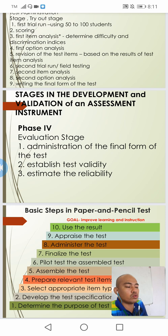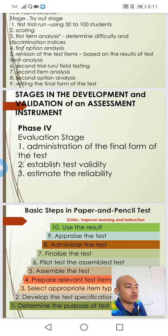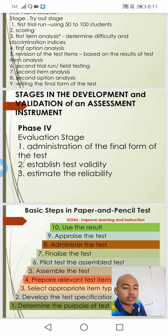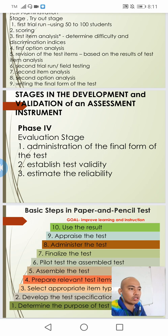For the fourth phase, this is the evaluation stage. We administer the final form of the test to establish validity and reliability. This is where we compute the validity index of our test instrument and estimate the reliability of our test instrument, completing the full process of development and validation of our assessment instrument.